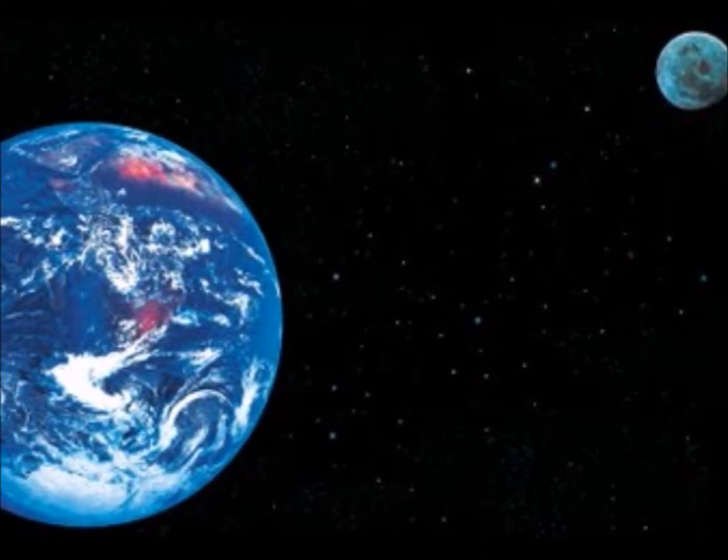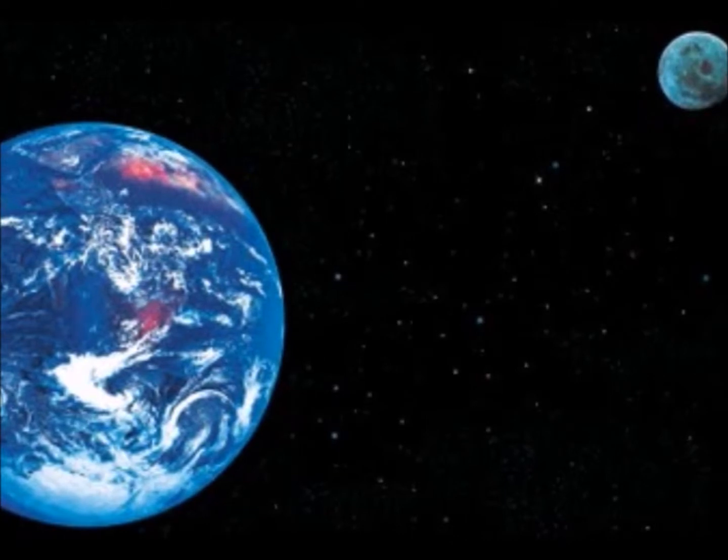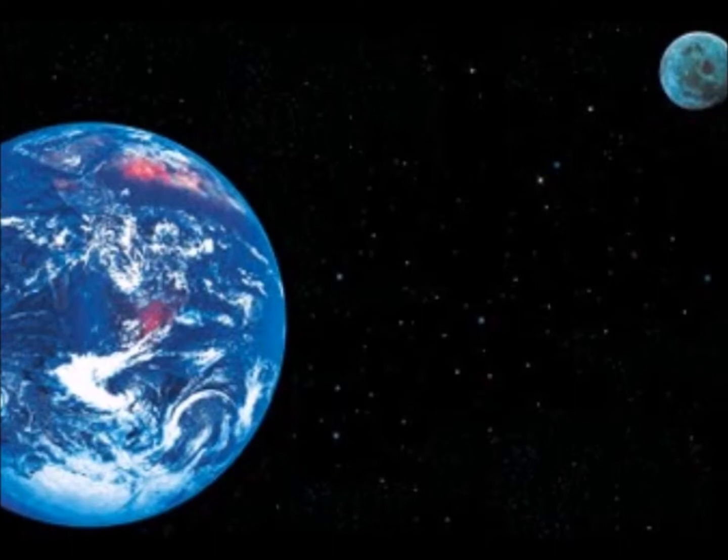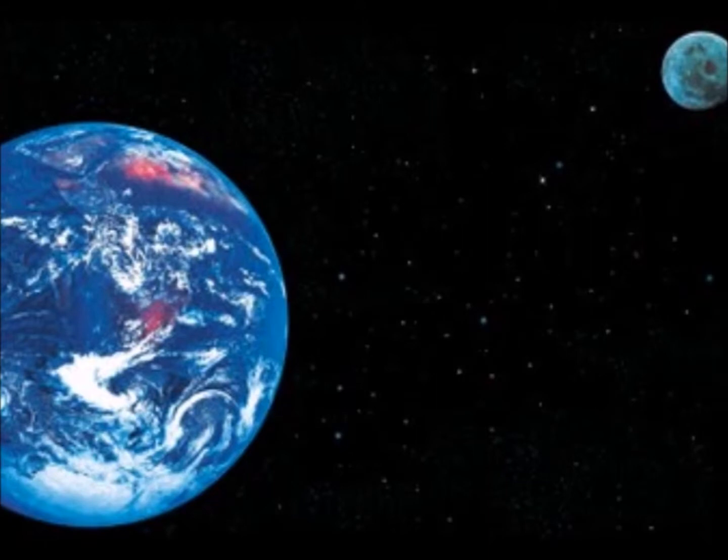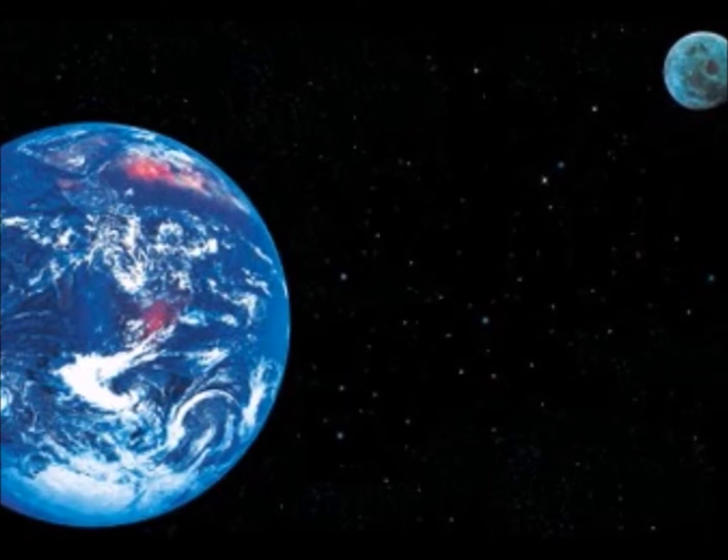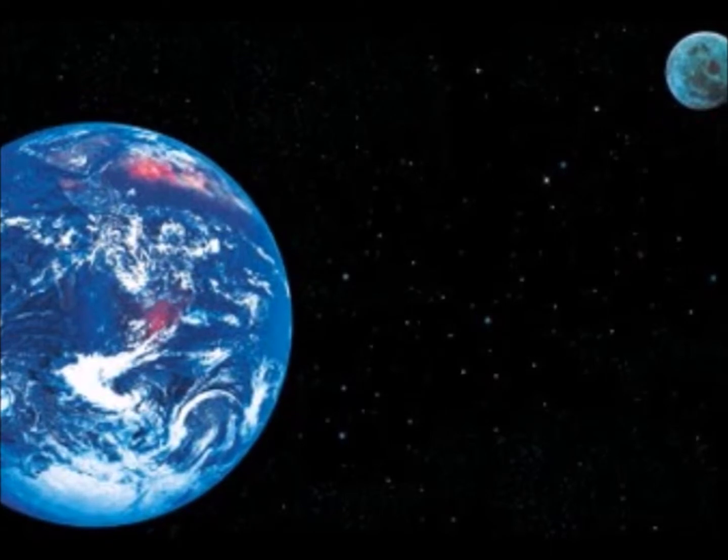Scientists have long believed that without the moon's stabilizing gravitational influence, variations in Earth's tilt would have caused climate change too dynamic for complex life to evolve. Not so, concludes a new study that has implications for understanding conditions for life elsewhere in the solar system.